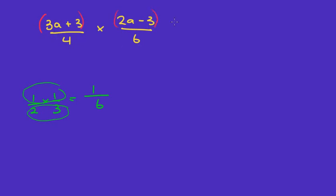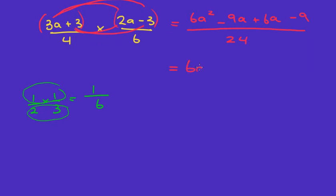We multiply the tops together and the bottoms together. Putting brackets around the top helps. So: three a times two a is six a squared, three a times negative three is negative nine a, three times two a is six a, and three times negative three is negative nine — all over four times six which is twenty-four. Combining like terms: six a squared minus nine a plus six a is minus three a, minus nine, all over twenty-four.